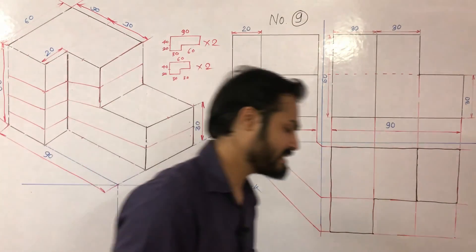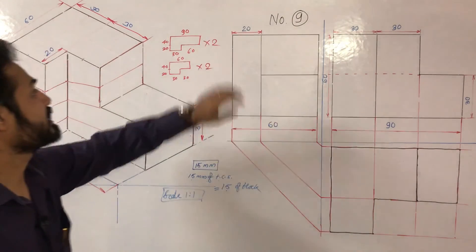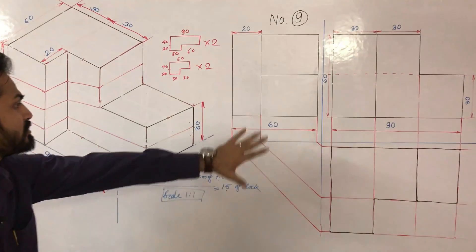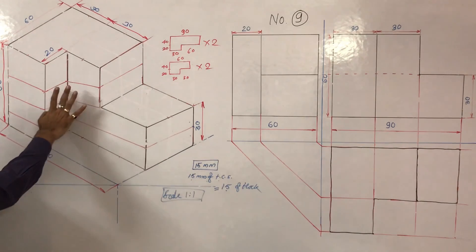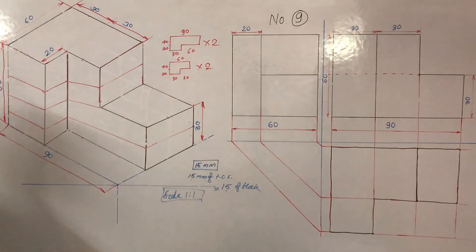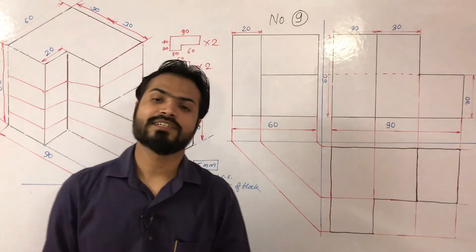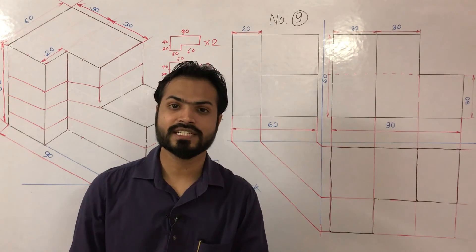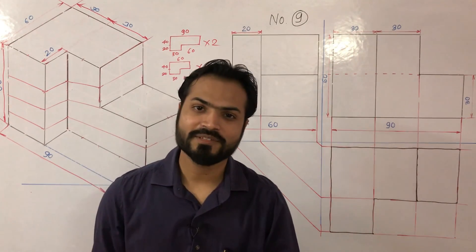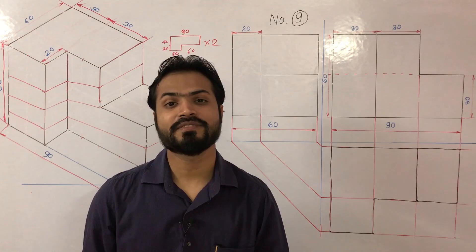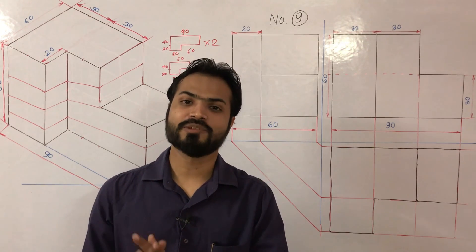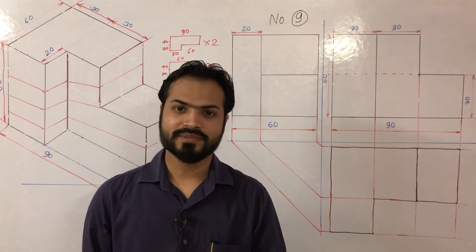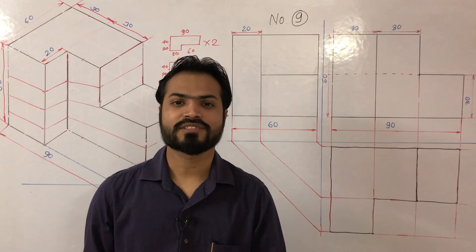This is all from my side for practical number nine. Please try to draw these views, use the isometric view, and try to make the thermocol model by your own using thermocol sheet. If you have any doubt or problem in any of the practicals or any topic of engineering graphics or machine drawing, write your comments in the comment box. Thank you.